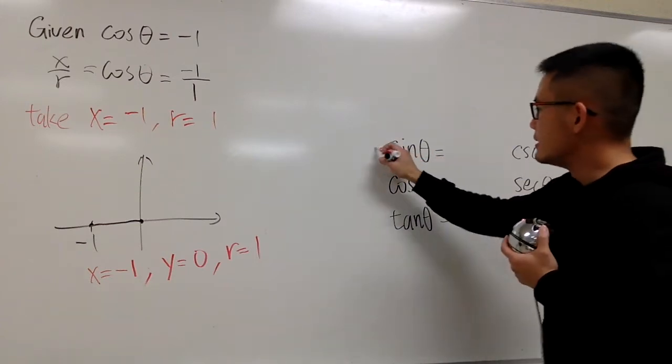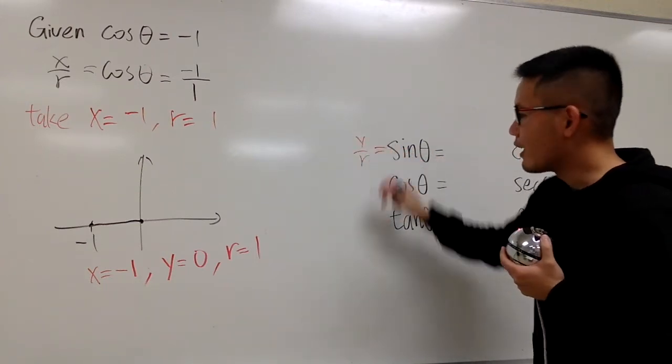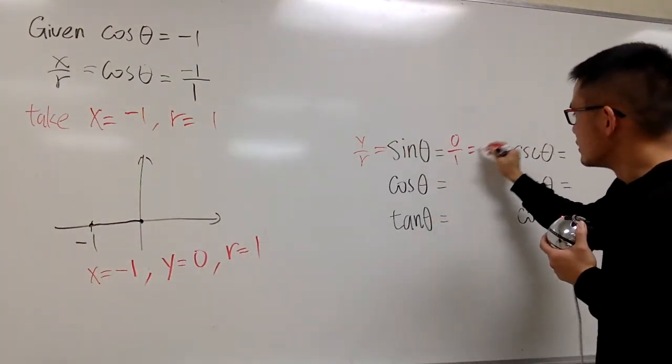Sine theta, this is equal to y over r, which is 0 over 1, which is 0.